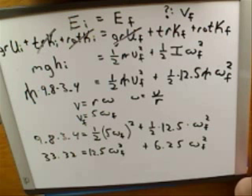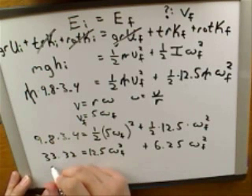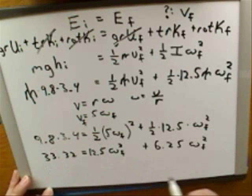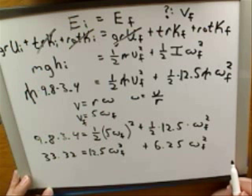You add the 6.25 plus the 12.5. I agree with that. So what does that give us as our new equation? 19.5, 19 omega finals.